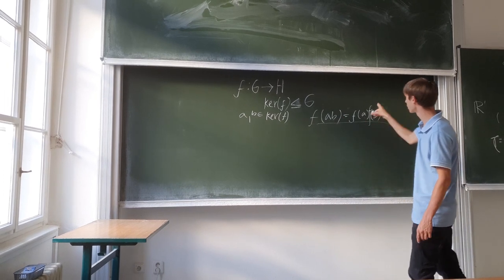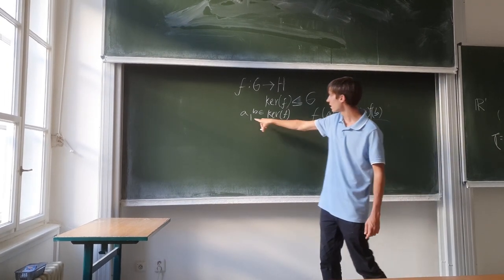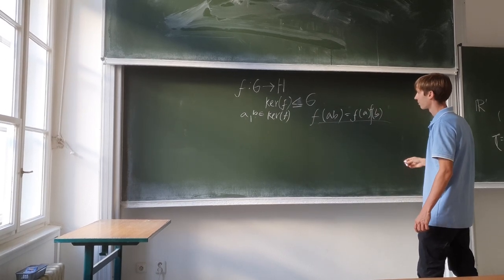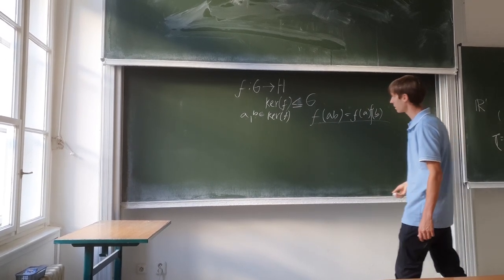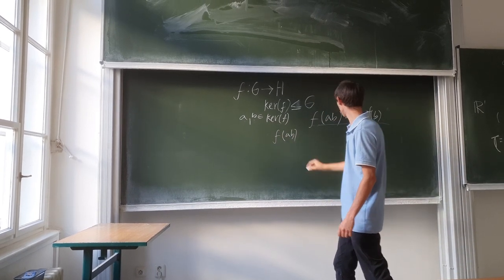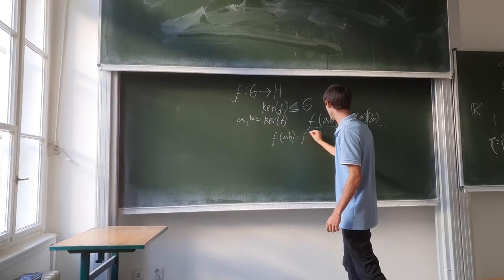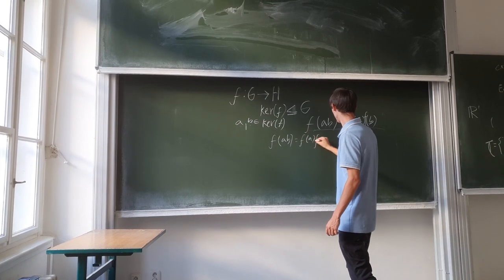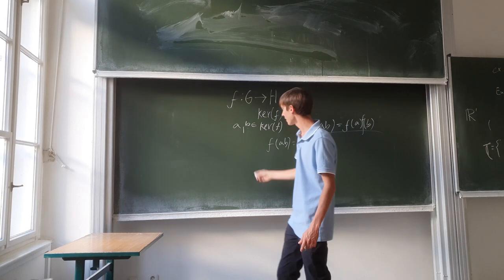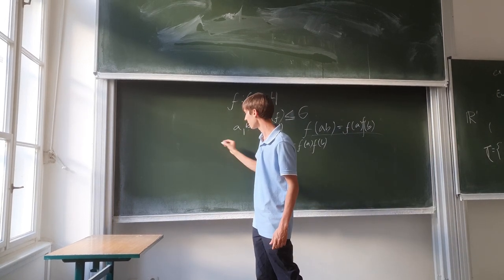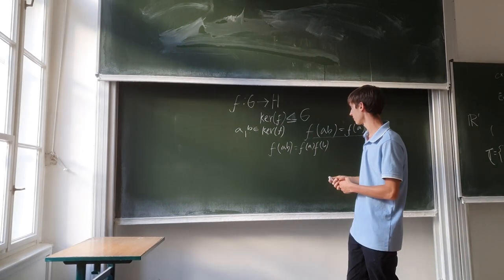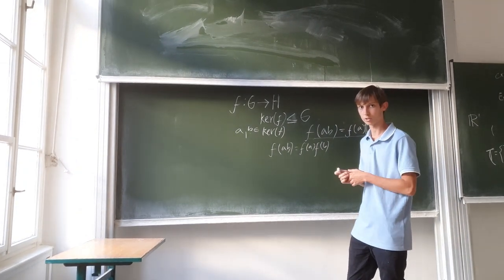Let's start by considering arbitrary elements a, b that belong to kernel f. Then it must necessarily be that the kernel of f means all the elements from G that are mapped to the identity element of H.